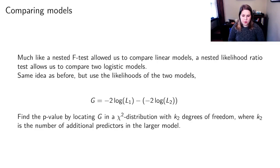And then there's one more type of hypothesis test that we might want to do, which is a nested likelihood ratio test. So this is similar to a nested F test, which let us compare linear models. This is a nested likelihood ratio test that lets us compare two logistic models. We find the G statistic like before, but we use the likelihood of the two models. So we use the likelihood from the smaller model and the likelihood from the larger model. And we find the p-value by locating G again in a chi-squared distribution, but it has k₂ degrees of freedom where k₂ is the number of additional predictors in that larger model. So again, pretty similar to the nested F test. So hypothesis tests are one way to assess the model.